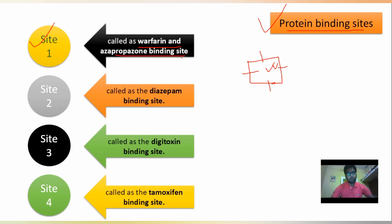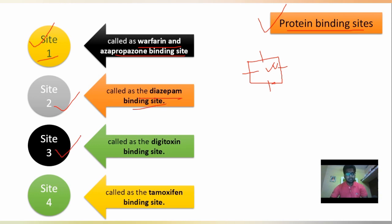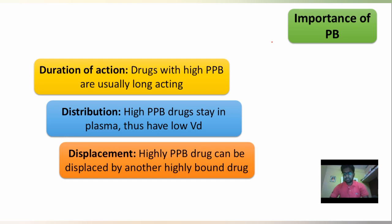You have to remember the names of these binding sites. Site one is the warfarin or azapropazone binding site. Site two is the diazepam binding site. Site three is the digitoxin binding site. Site four is the tamoxifen binding site.